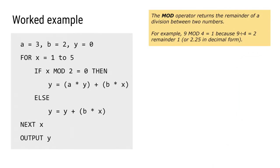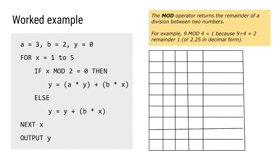In this third example we've got four variables: a, b, x, and y, and one output, so we're going to have five columns in our trace table with headers a, b, x, y, and output. On the very first line of the algorithm, a is assigned 3, b is assigned 2, and y is assigned 0. There's no value given for x yet. When we start the for loop, we put x's first value of 1 on a new line.